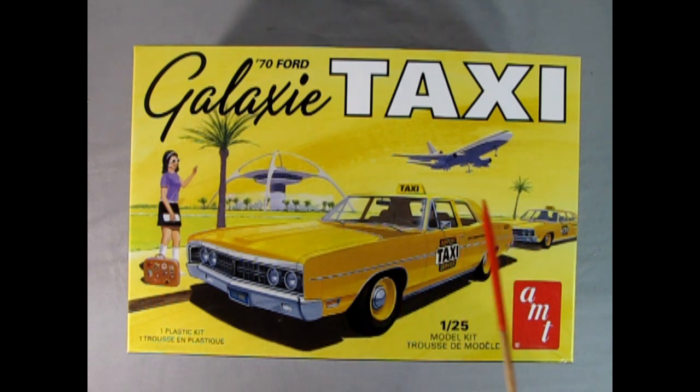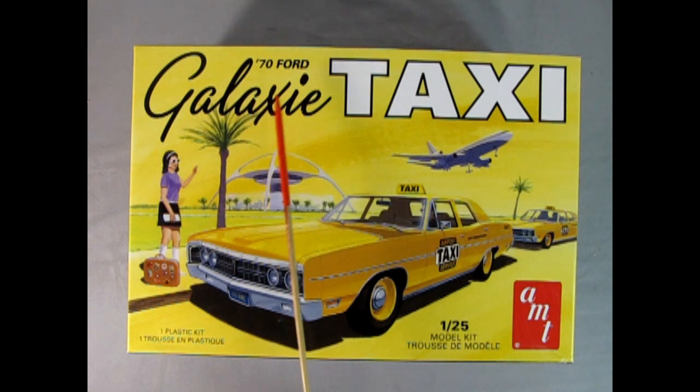Check out this cool box we have here. I love the artwork on this. What we've got is AMT's 1970 Ford Galaxy Taxi. And here we have a nice looking woman from the 1970s hailing down this great taxi cab, a Ford product with the four doors. This is the airport taxi service. And here in the background you've got the airplane tower with a really cool looking futuristic style building. And right here we've got our big jumbo jet liner taking off. And the girl also has a suitcase with all the different destinations that she's visited as stickers stuck on here.